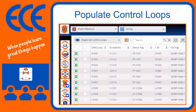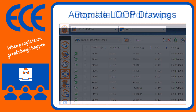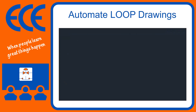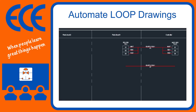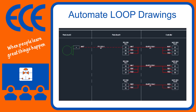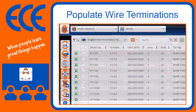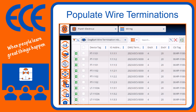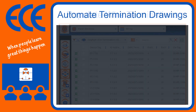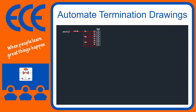Take control points to the next level with loops and generate some loop drawings. And then if you just need some termination diagrams, Diagrams to the rescue — easily generate termination diagrams from your data sets.